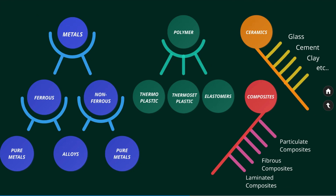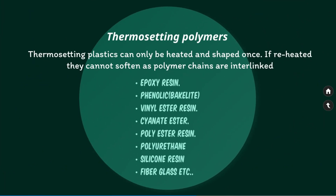Thermosets are typically heated during initial processing, after which they become permanently hard. Thermoset will not melt upon reheating; however, if the applied heat becomes extreme, the thermoset will degrade due to the breaking of molecular bonds. Thermosets typically have greater hardness and strength than thermoplastics, and also better dimensional stability when subjected to temperature and moisture changes. Examples of thermosetting polymers are epoxy resin, Bakelite, vinyl resin, cyanate, polyester resin, polyurethane, silicone resin, and fiberglass.